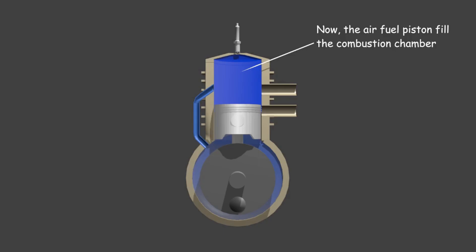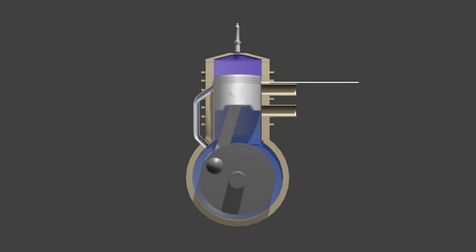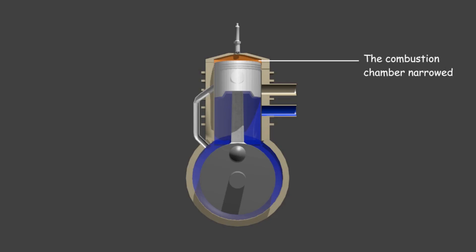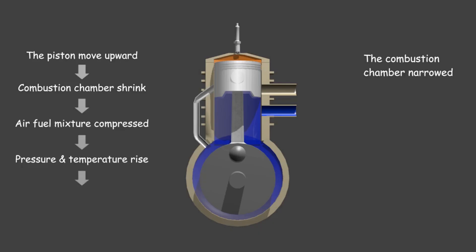After that, return to step one where the piston moves up again. Then, the crank chamber enlarges, so that air and fuel are sucked in, while the combustion chamber is narrowed. Even though this space is filled with air-fuel mixture, this condition makes the air-fuel mixture in the combustion chamber compress, so that the temperature and pressure rise.